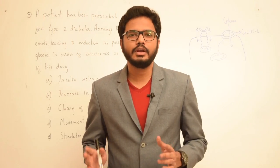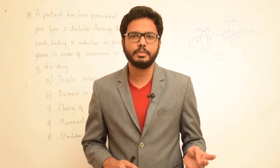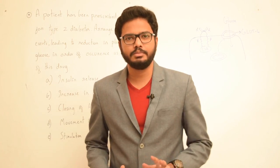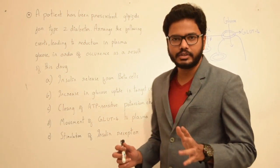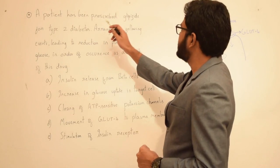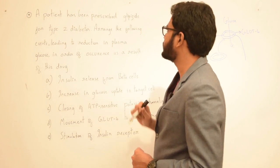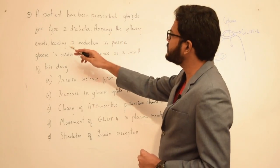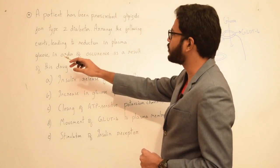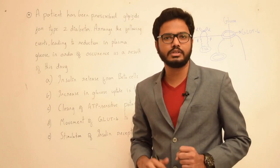Hi, in this video let's discuss a few important points pertaining to the functioning of certain oral hypoglycemic drugs. We'll start with the question: a patient has been prescribed glipizide for type 2 diabetes. Arrange the following events leading to reduction in plasma glucose in order of occurrence as a result of this drug.